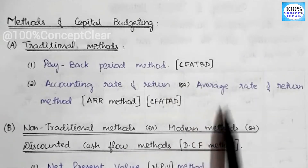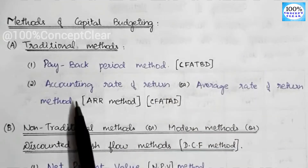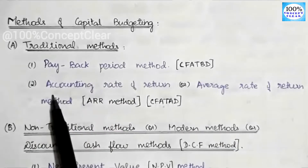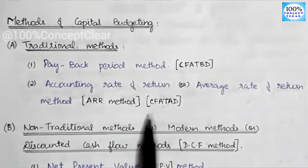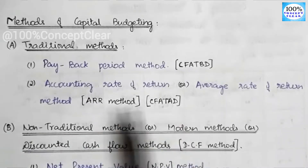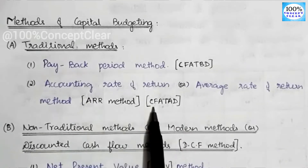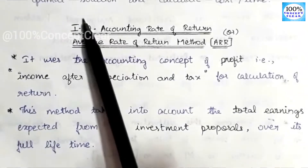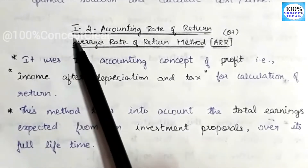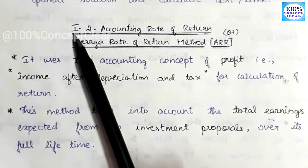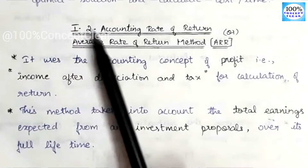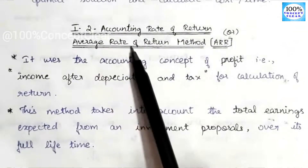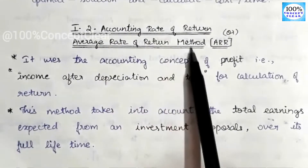In this video, we are going to cover the traditional method — specifically the second method, which is the ARR method. The traditional method here is the accounting rate of return, also known as the average rate of return method. So we have two names for it.